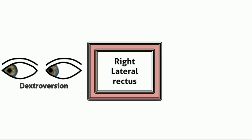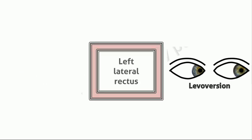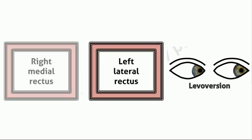Let us first consider dextroversion. The muscles required for this are the right lateral rectus and the left medial rectus, so these two are considered the yoke muscles for dextroversion. For levoversion, the left lateral rectus and the right medial rectus are yoke muscles. Determining the yoke muscles for horizontal movements is very easy.